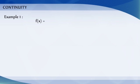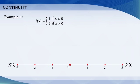Continuity. Let us learn the concept of continuity with the help of two examples. Consider the function f of x is equal to 1 for all the x values less than or equal to 0, and f of x is equal to 2 for x greater than 0. From the definition, it is clear that the function f of x is defined at every point of the real line.